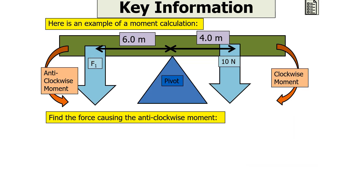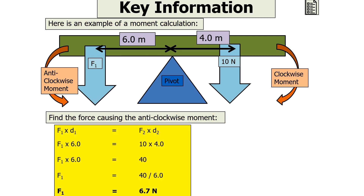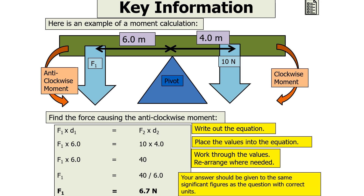Here is an example of a moment calculation: find the force causing the anticlockwise moment in this situation. We can say force 1 times by distance 1 equals force 2 times by distance 2 — so force 1 times 6 equals 10 times 4. Force 1 equals 40 over 6, which is 6.7 Newtons. Write out your equation, place your values into the equation, rearrange where needed, and give your answer to the same significant figures as the question with the correct unit.